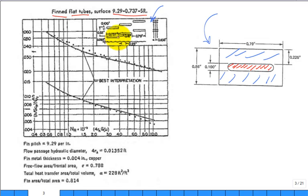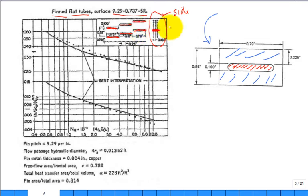You can see the flat tube passages and the plate fins connecting them. There's also a zoomed-in side view showing the passage for the water and the fins. The fins aren't just straight — they have kinks in them, which promotes heat transfer on the air side by causing the flow to oscillate slightly.